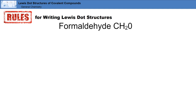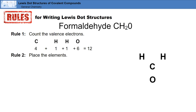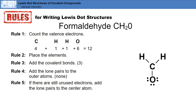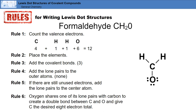Finally, we'll look at formaldehyde. We'll start by applying the first five rules. Then we'll apply rule six. Oxygen shares one of its lone pairs with carbon. This creates a double bond between carbon and oxygen, and gives carbon the needed eight electron total. This is the Lewis dot structure for formaldehyde.